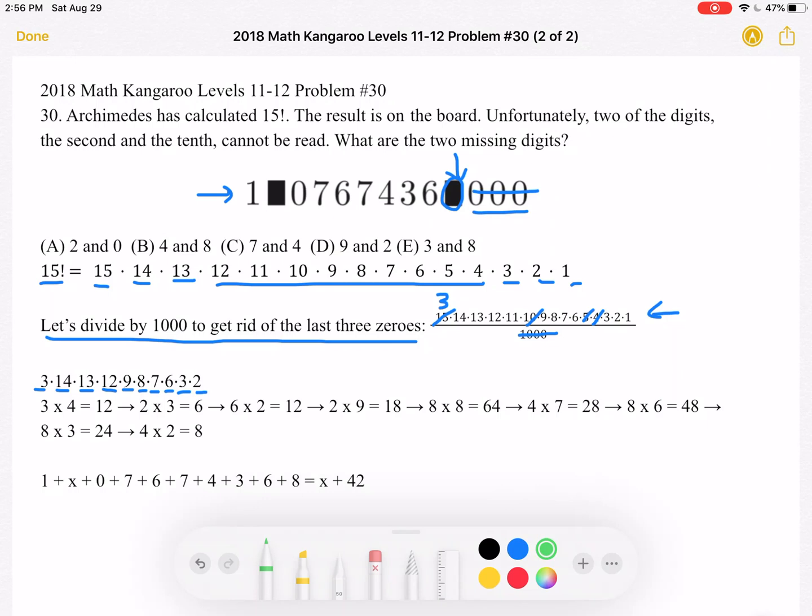Let's only focus on the last digit. First we have 3 times 4 which is 12, and again we're only focusing on the last digit.